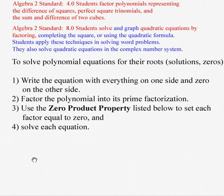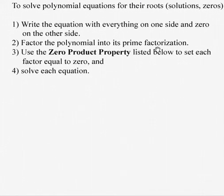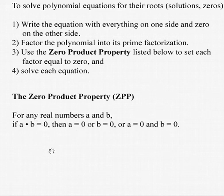To solve polynomials, we're looking for something called roots, solutions, or zeros. They all mean the same thing. First step is to write the equation with everything on one side of the equal sign and zero on the other side. Second step is to take the polynomial that's by itself and put it into its prime factorization, utilizing all that we've just learned about factoring polynomials. Third step is to use the zero product property to set each factor equal to zero, and then the last step is to solve each equation that we end up with.